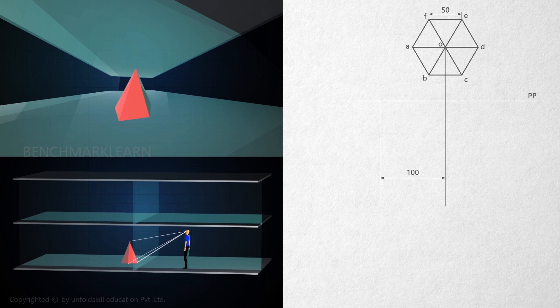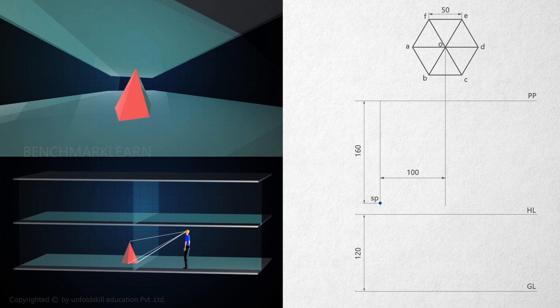The station point is at a distance of 160 mm in front of the picture plane. Draw GL at a distance greater than 120 plus 160 equals 280 mm. Draw HL at a distance 120 mm above GL. Here HL and CP meet at SP dash.